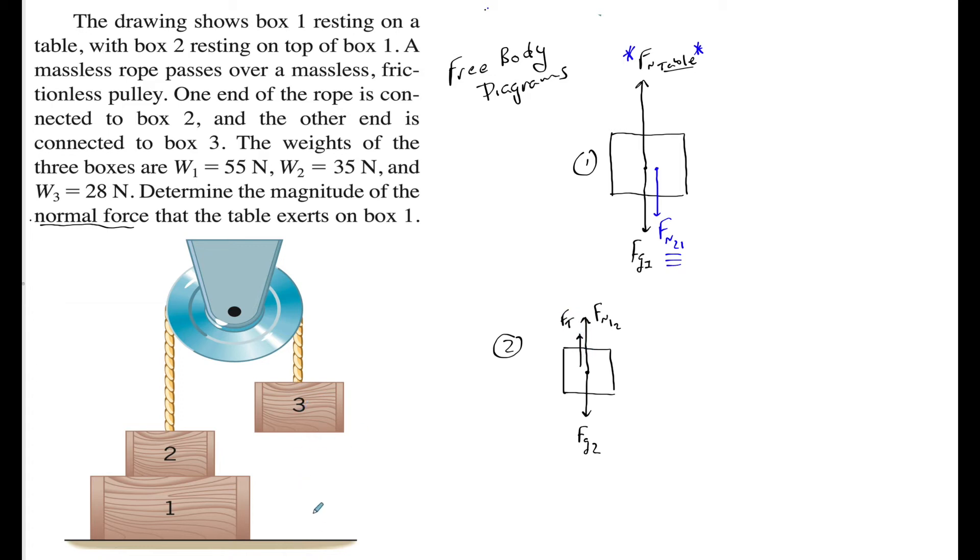Now if box 3 was on the ground at rest as well, there would be no tension force. There must be a pull for tension to exist. So usually when we see at rest, we have to be careful. But because there's going to be forces acting and pulling this rope, there will be a tension force. So now let's look at box number 3.